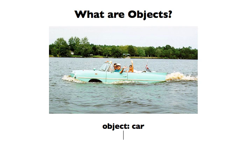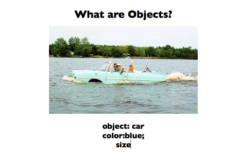We can also think of adjectives, which are going to be descriptors, and those can be very similar to properties in programming terms. A property might be the color, and the value of this color property would be blue — it's a very light blue. Another type of property might be size. We'll keep this simple and say small, medium, or large, and we'll say that this is a small car.